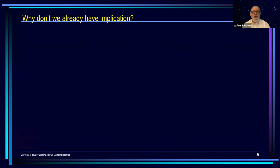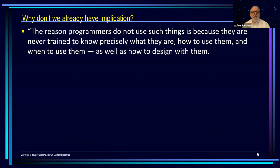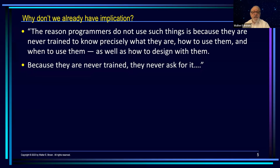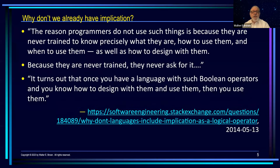It's always puzzled me why we don't already have Implication, but then I found this quote that seems to hit the nail on the head: the reason programmers do not use such things is because they're never trained to know precisely what they are, how to use them, and when to use them, as well as how to design with them. And because they are never trained, they never ask for it. Once you have a language with these Boolean operators and you know how to design with them and use them, then you use them. I believe that's absolutely correct. I've been using Implication for the better part of 45 years now, off and on, and the fact that we don't have it in C++ yet is significant.